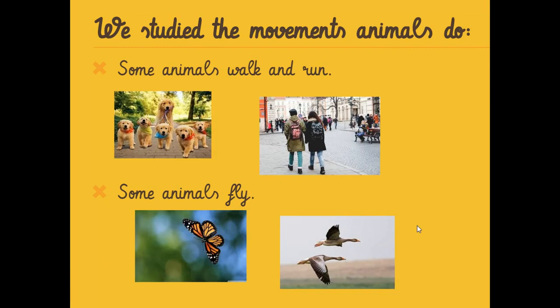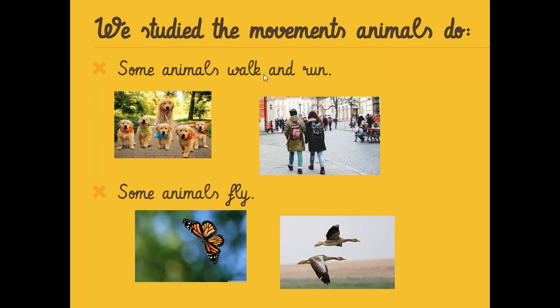Then we also studied the movements that animals do. Some animals can walk and run. For example, these dogs are walking, and these humans are also walking.